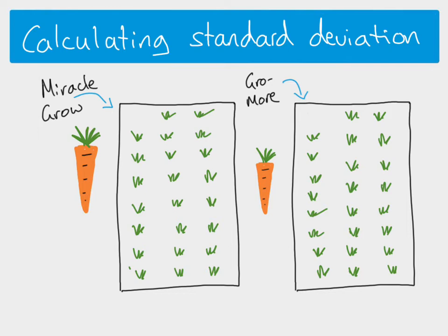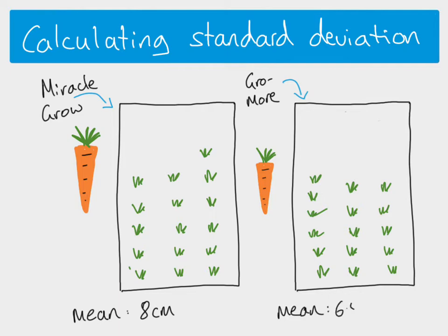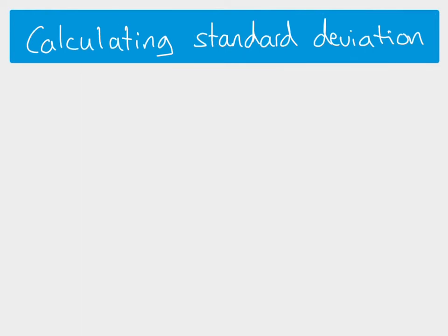She knows that a single carrot is not necessarily representative of all the carrots in each field, so she needs to take a bigger sample. She takes eight carrots from the Miracle Grow field, measures the length of all of them, and finds a mean length of eight centimeters. Then she does the same with Grow More — takes eight carrots as a sample — and finds a mean length of six point five centimeters. So it looks as if Miracle Grow produces larger carrots, but looking at the mean alone might not be representative.